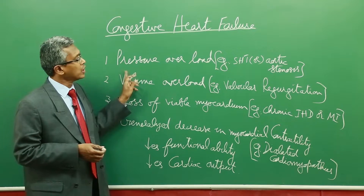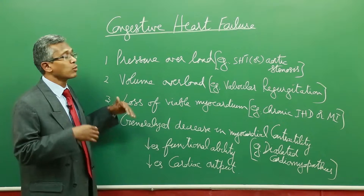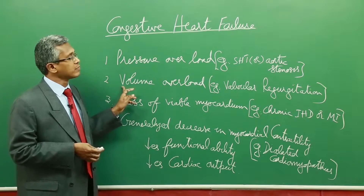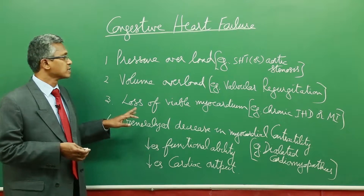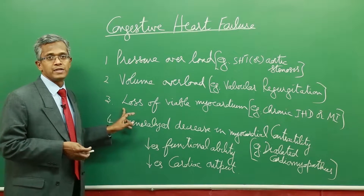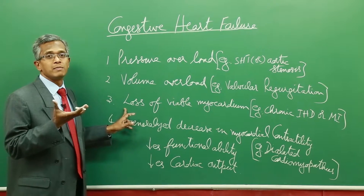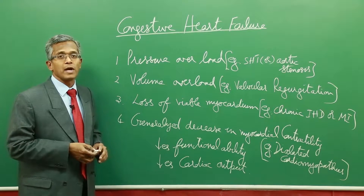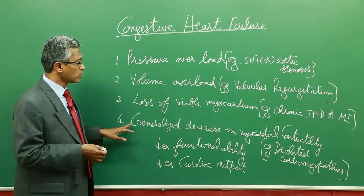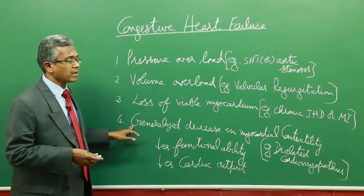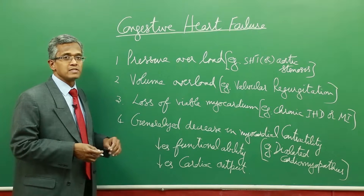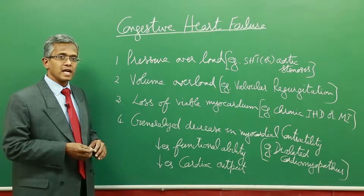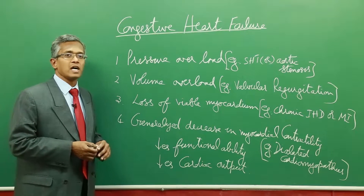Pressure overload can happen in case of systemic hypertension or aortic stenosis. Volume overload can happen in case of valvular regurgitation. Number three is loss of viable myocardium — the myocardium loses its viability to undergo systole in case of chronic ischemic heart disease or myocardial infarction. The fourth is generalized decrease in myocardial contractility, which happens especially in dilated cardiomyopathies.